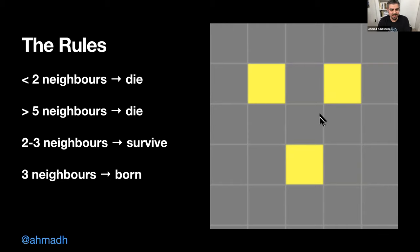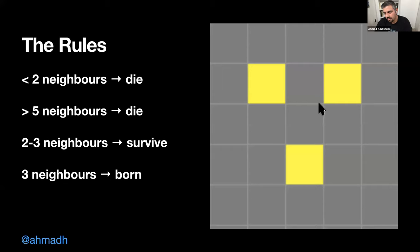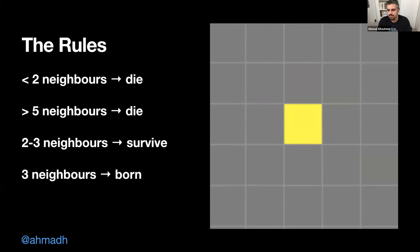Looking at a pattern of three cells: this one is alone with no neighbors so it dies, this one is alone so it dies, this one is also alone so it dies. But a new cell is born in between because it has exactly three neighbors. So the three cells all died but a new one emerged in between.